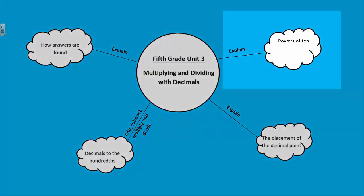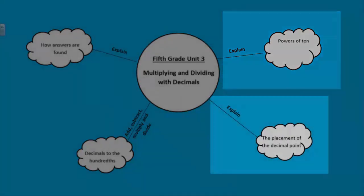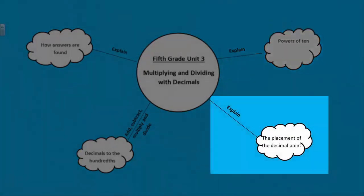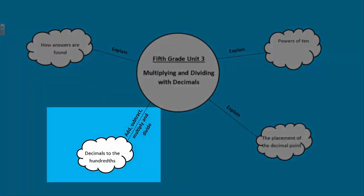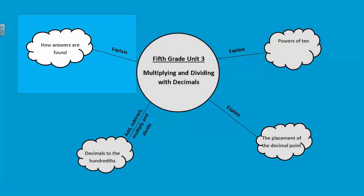In Unit 3, students explain patterns in the number of zeros of the product when multiplying a number by powers of 10 and explain patterns in the placement of the decimal point. Students also add, subtract, multiply, and divide decimals to the hundredth place using concrete models or drawings and strategies based on place value and the properties of operations. Students relate their strategy to a written method and explain their reasoning.